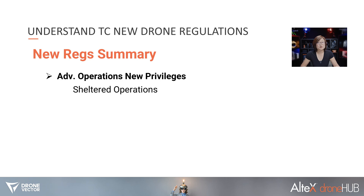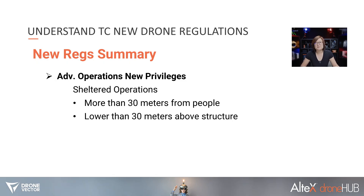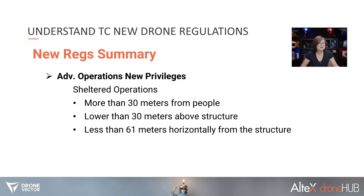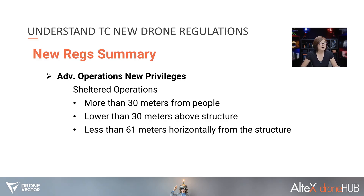The first is sheltered operations. The details include more than 30 meters from people — that's general public not involved in your operations — lower than 30 meters above the structure, and less than 61 meters horizontally from the structure. Sheltered operations is a form of limited BVLOS. For example, if you're inspecting a building facade and rotate the drone behind the building, you will momentarily lose visual line of sight. Sheltered operations supports this — you don't have to go through the full BVLOS process; you can still operate under advanced operations while meeting these requirements.